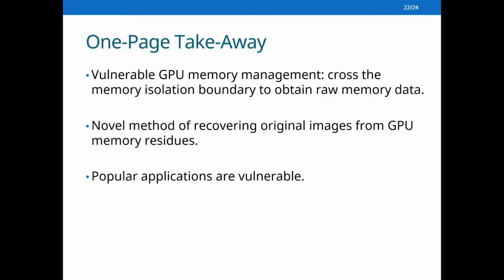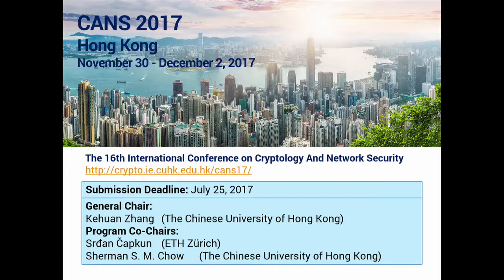To summarize: in this work we find that current GPU memory management is vulnerable — malicious programs can cross the memory isolation boundary to obtain raw memory data. We propose a novel method of recovering original images from GPU memory residues, and our evaluations show that several popular applications are vulnerable. Also, this year's CNS will be hosted by the Chinese University of Hong Kong — if you want to visit Hong Kong in December, consider submitting your work, as the deadline is next week. Thanks for listening.